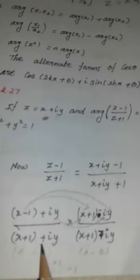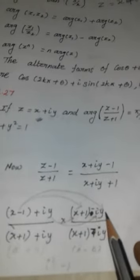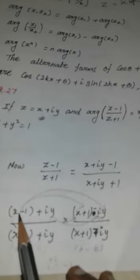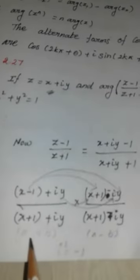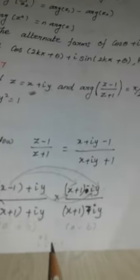I multiply numerator and denominator by the conjugate of the denominator, which is (x + 1 − iy). The numerator becomes (x − 1)(x + 1 − iy) + iy(x + 1 − iy). Using (a+b)(a−b) = a² − b² and i² = −1, expanding gives: (x−1)(x+1) − iy(x−1) + iy(x+1) − i²y² = x² − 1 + y², with imaginary terms iy(x+1) − iy(x−1).